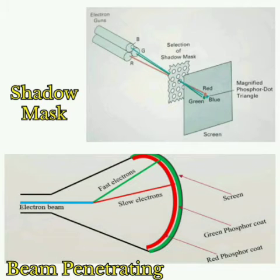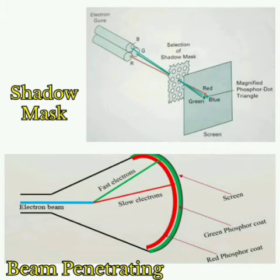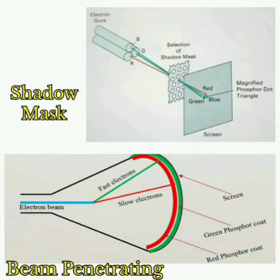Now we will see about shadow mask and beam penetration methods. Shadow mask is made by photochemical machining. Here, three electron guns — red, green, and blue — at the back of the screen are used. It hits the desired points and the resulting picture is not blurred. Millions of colors are produced using shadow mask. It is commonly used in raster scan systems, including color TV. It is very expensive, picture quality is quite good, and it produces realistic views but with less resolution.